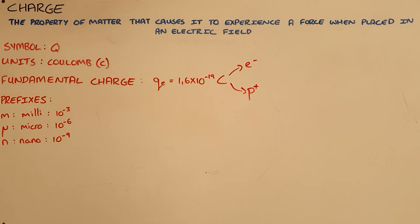Now, due to the size of the fundamental charge, the coulomb is a very big unit, so we would often refer to charge in either of these prefixes: milli, micro, or nano.